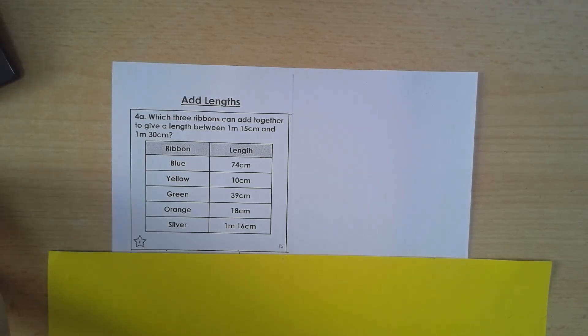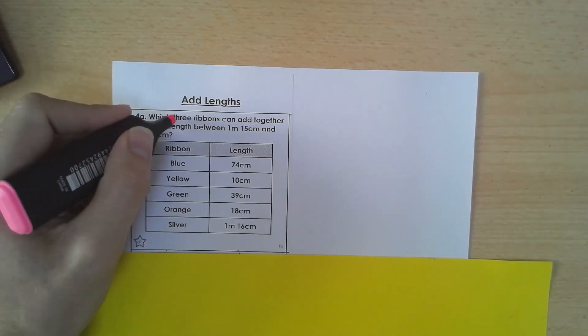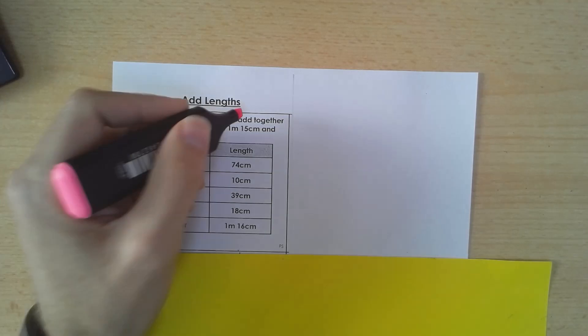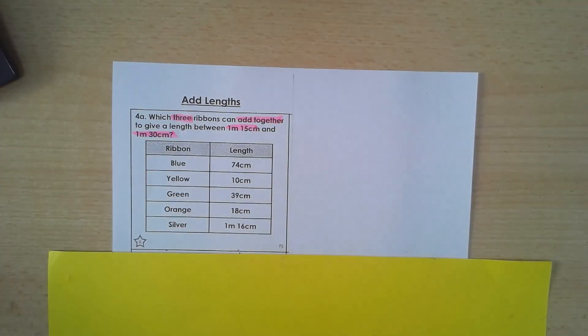which three ribbons can add together to give a length between 1 metre and 15 centimetres, 1 metre and 30 centimetres. So the key words are three ribbons, add together, and my two amounts there, which I'm just going to highlight to help me remember.